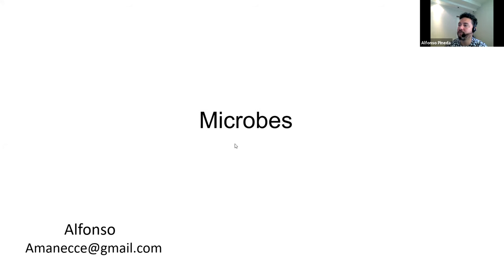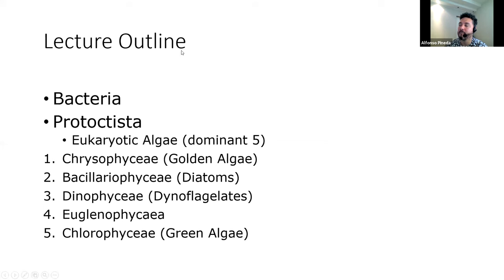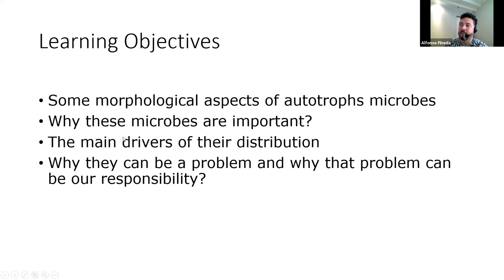In this lecture, we will talk about aquatic microbes — microorganisms. We will talk about bacteria, the protoctytes, and in the case of these protoctytes, we are talking about five groups of eukaryotic algae. The learning objectives: my intention is that at the end of this lecture, you will be able to recognize some morphological aspects of autotrophic microbes, why these microbes are important for the ecology of the environment and for humans, the main drivers of their distribution and abundance, and why they can be a problem — and why that problem can be our responsibility.